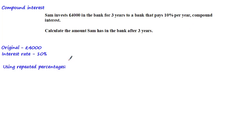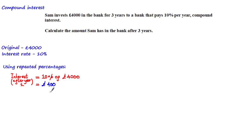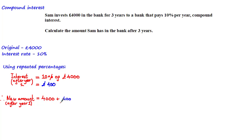We're given that the interest rate per year is 10% and this is a compound interest question. We can solve this using a process called repeated percentages. We calculate the interest after one year by taking 10% of the original amount, £4,000, which equals £400. The new amount after one year is £4,000 plus £400, which equals £4,400.